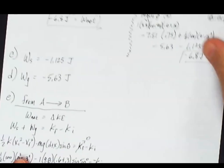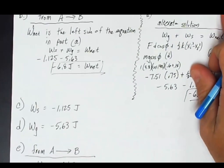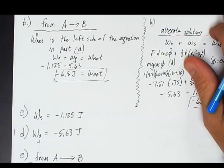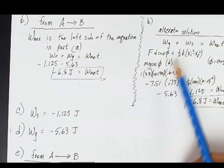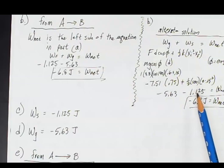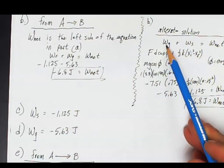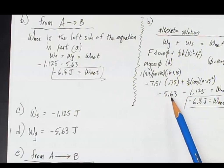Parts C and D, again, it's just recognizing where in the equation these values are so you can identify them. Here is the work done by the spring, 1.125. So that's my answer for C. And here is my work for gravity, negative 5.63. So that is my answer for part D.